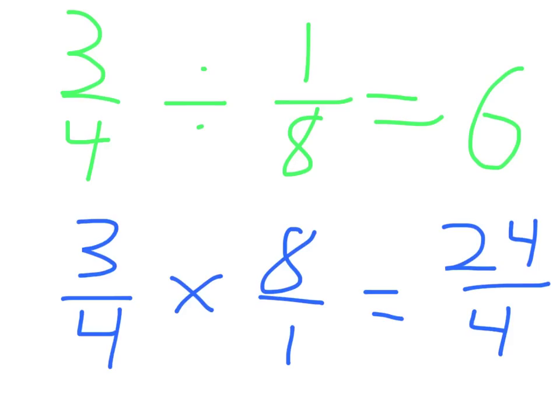Now, to demonstrate that the multiplying by the reciprocal method does work, we've got three-fourths divided by one-eighth equals six up here. And now I've shown three-fourths multiplied by the reciprocal of one-eighth, which is eight over one. And that should also equal six.